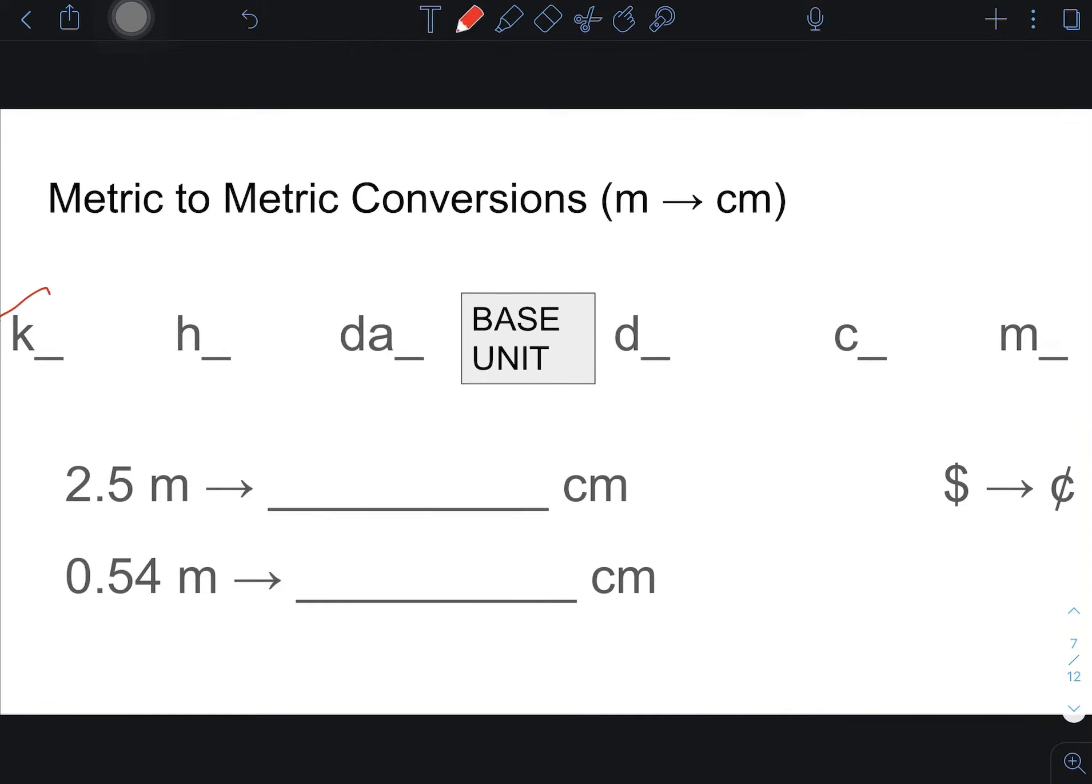So if our base unit is meters, which is represented by an M, if we start with 2.5 meters, we want to figure out how many centimeters. This is something that we've talked about throughout the years about how can we kind of do this. Because this is something we want you to very quickly be able to get between centimeters and meters. So if we kind of draw the analogy of dollars and cents, you guys can do these no problems.